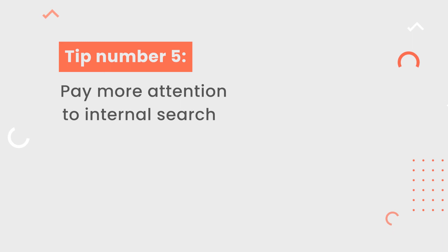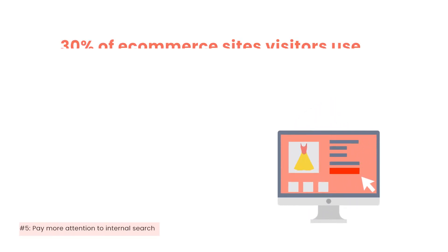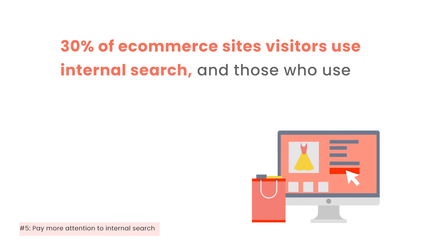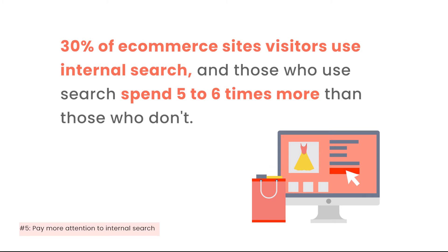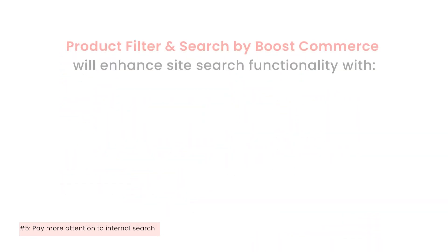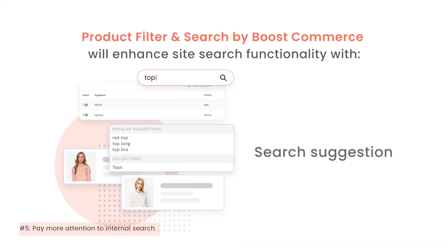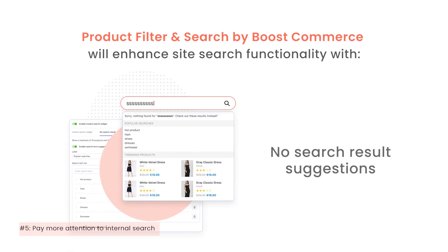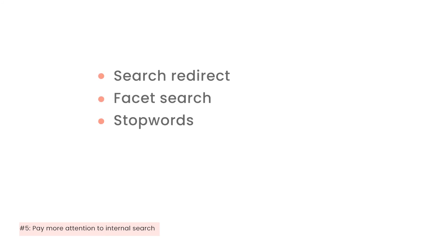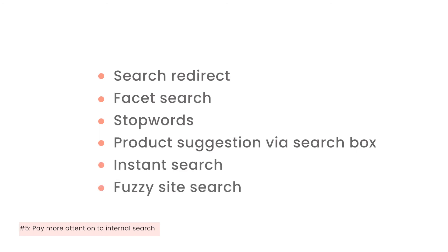Tip number 5: pay more attention to internal search. According to a consultancy, 30% of e-commerce site visitors like those on Shopify use internal search, and those who use search spend 5-6 times more than those who don't. That is a massive number. Although Shopify is a great platform for e-commerce, when it comes to internal site search, it offers just basic features that cannot meet demand. To solve this problem in Shopify, you have to use a third-party search app. For example, with BoostCommerce's Advanced Filter and Search app, you can enhance your site search functionality with search suggestion, typo-tolerance, no-search-result suggestions, synonyms, and many more helpful features. With this major improvement, you not only ensure your online consumers will find what they are looking for through search, but also boost conversion rates overall.